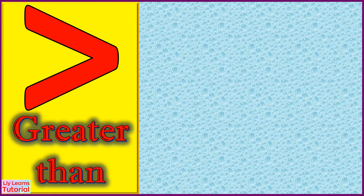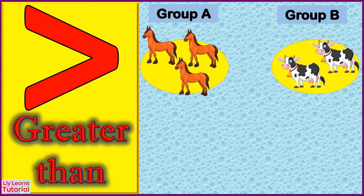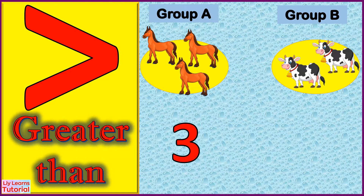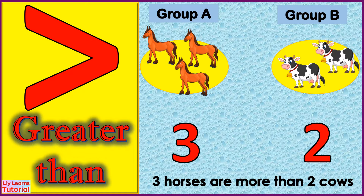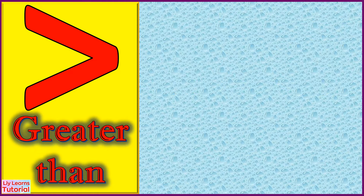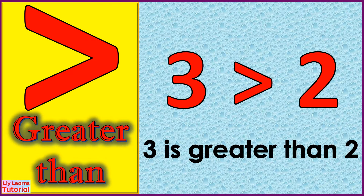Let's look at these examples — Group A and Group B. Group A has three horses, while Group B has two cows. Three horses are more than two cows, so we use the greater than sign. We therefore read this as: three is greater than two.